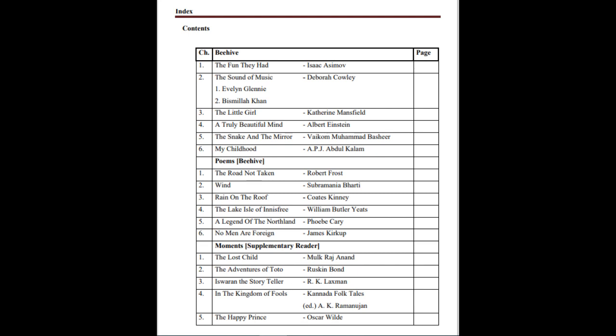Next we have poems from Beehive, six poems that we are going to cover in Sem 1. The first one, which you already learnt last year in Standard 8, The Road Not Taken by Robert Frost. Second is Wind written by Subramania Bharati. Third one is Rain on the Roof by Coates Kinney. The fourth one, The Lake Isle of Innisfree written by William Butler Yeats. The fifth one is A Legend of the Northland by Phoebe Carey.